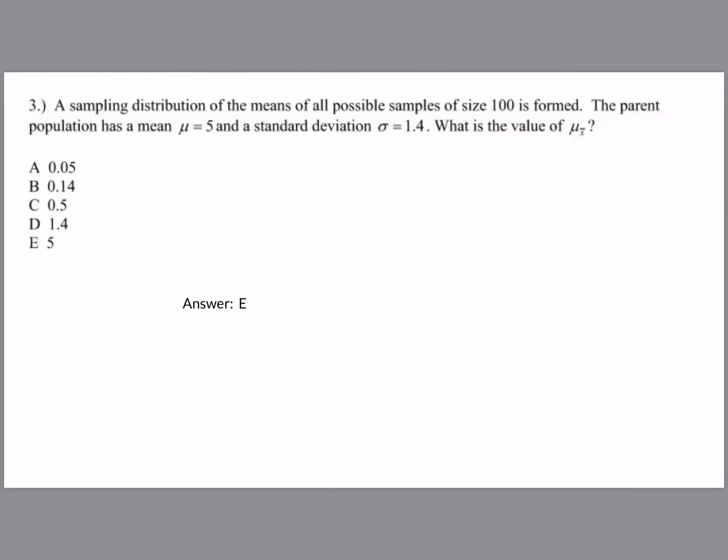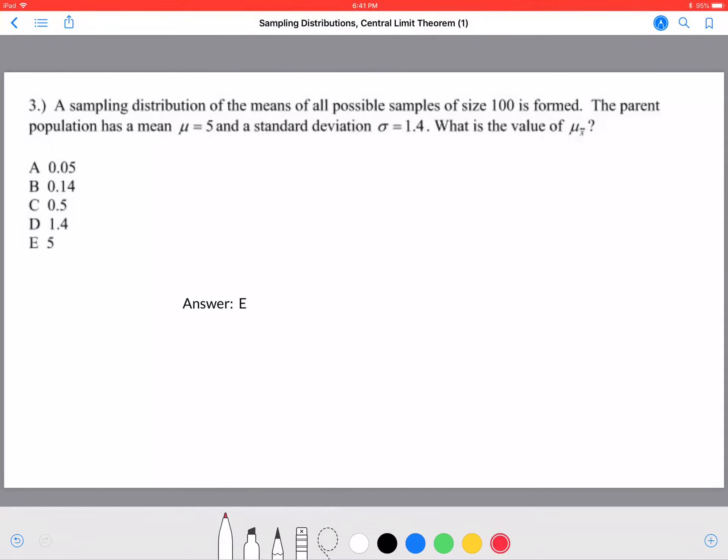We don't even care about the sample size or any of this other info because we have rule 1, which says that if I'm truly taking the sampling distribution of means of all possible samples, it is equal to the population mean. So we can easily just answer 5 and call it a day.